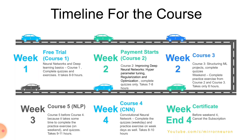This is the strict timeline I followed. In week one, which is the free trial from Coursera, I completed Course 1 — Neural Networks and Deep Learning basics — including all the quizzes and exercises. It took me roughly eight to nine hours. Depending on how comfortable you are with Python and grasping new concepts, add or subtract one to two hours, but it should fall within seven to eleven hours.